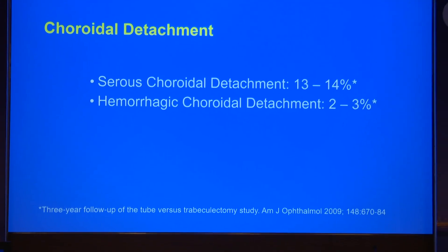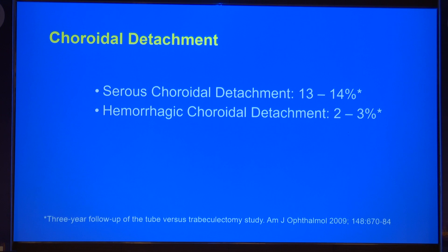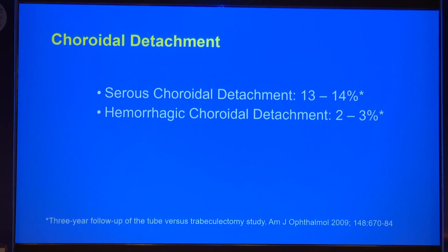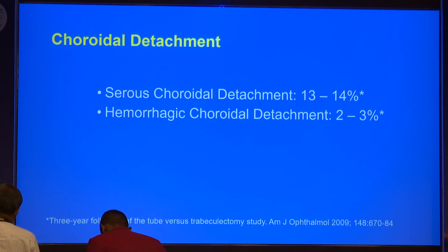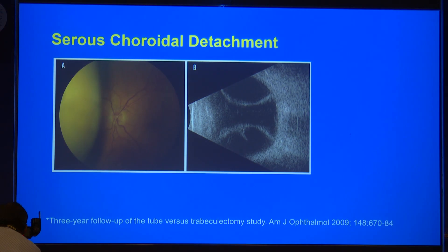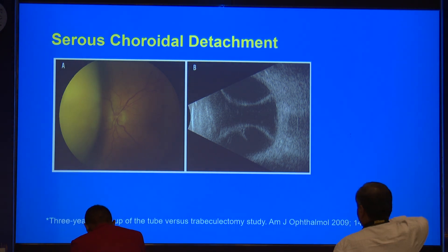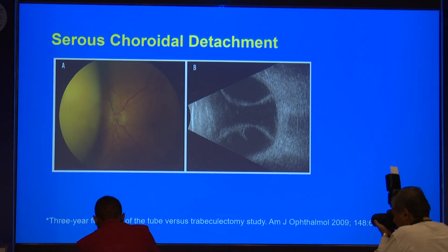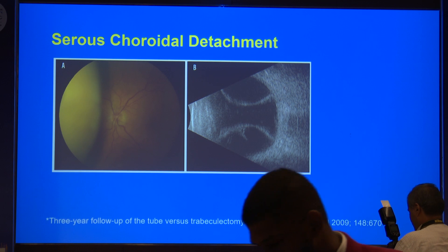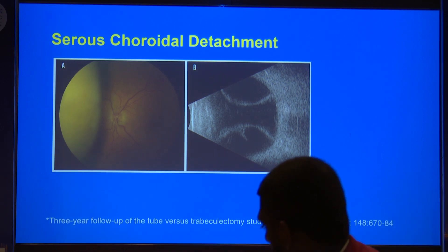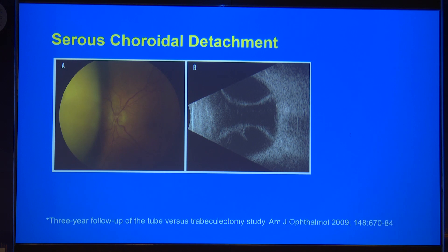Choroidal detachment is a very common complication of glaucoma surgery and mostly self-limiting with correction of hypotony. Around 14 percent of patients will have serous choroidal detachment and hemorrhagic choroidal detachment happens in around 2–3 percent of eyes. A serous choroidal detachment shows a large or subtle mound in the periphery, and on ultrasonography the choroid is elevated with a hypoechoic space between choroid and sclera — meaning it is filled with serous fluid, not hemorrhagic.